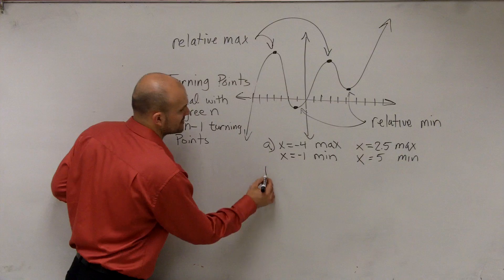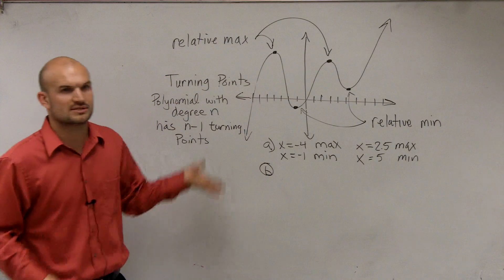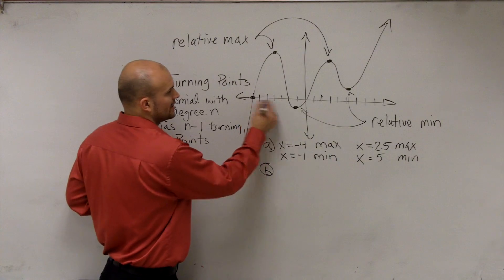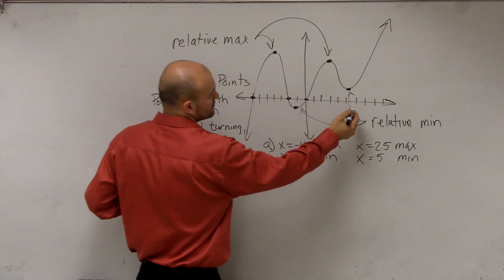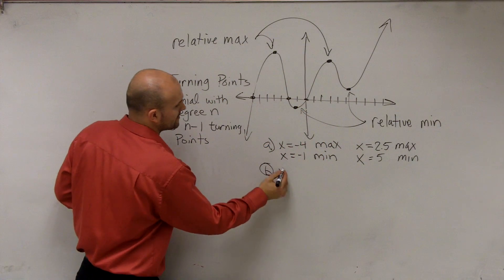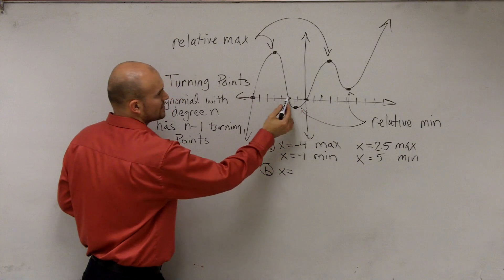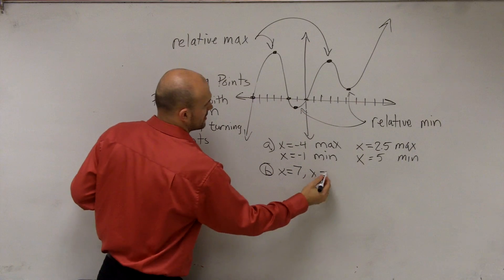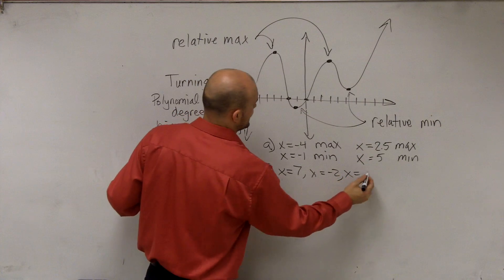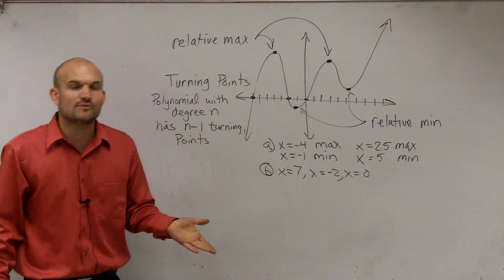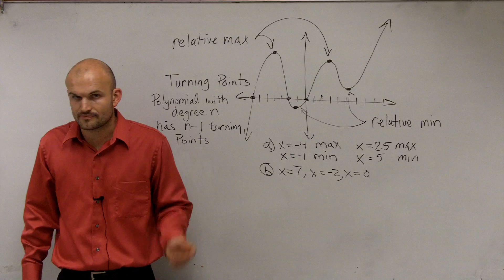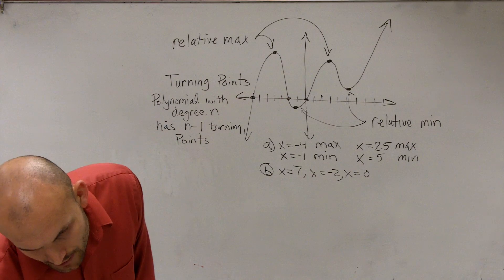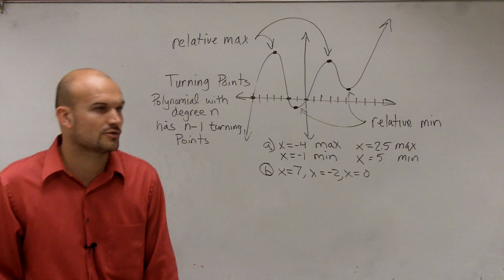The next thing we need to do is estimate our zeros, because now the axis has coordinates. Let's estimate the zeros. We have a zero here, here, and here. So we could say x equals negative 7, x equals negative 2, and x equals 0. For part b, we want to estimate the number of zeros. And for part c, we want to determine the smallest possible degree of the function.